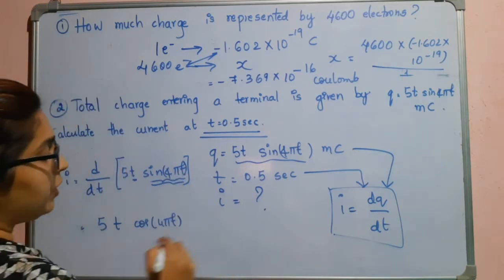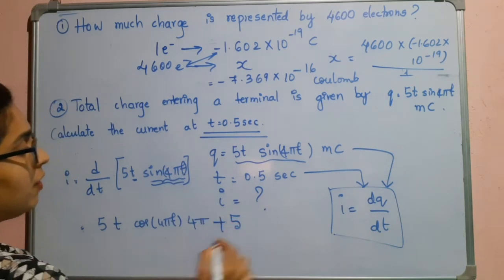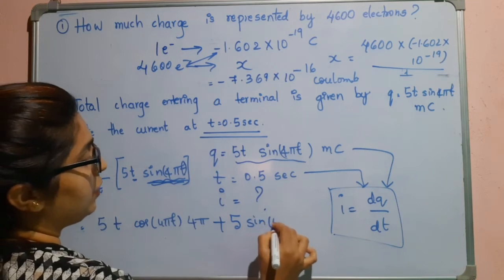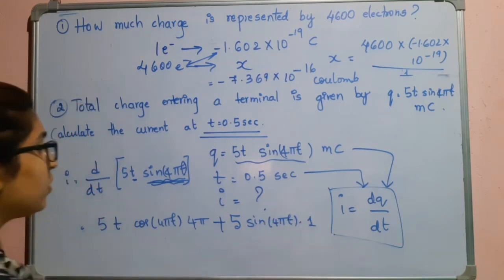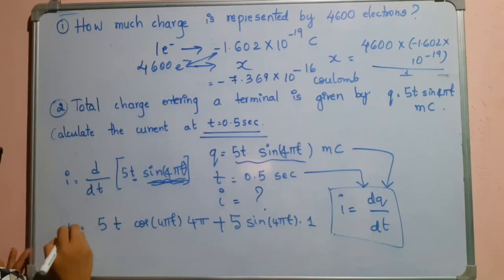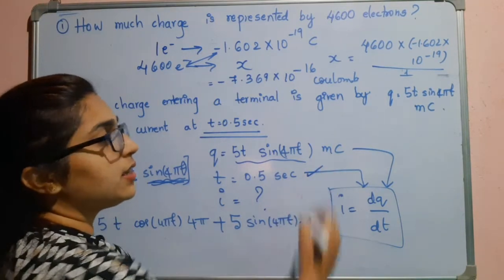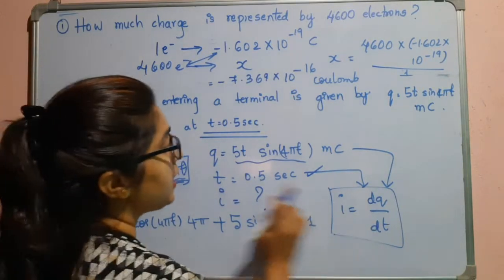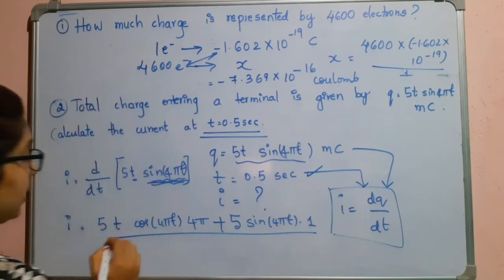We have to differentiate that also, so that is 4π, plus now I will keep the sin(4πt) term as it is and differentiate t with respect to t, that is 1. So this is the expression for i. Now we have to find this current at t = 0.5 seconds.